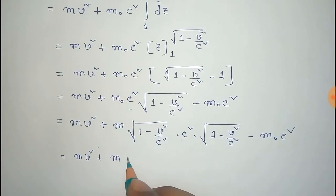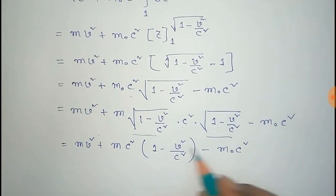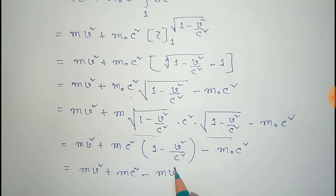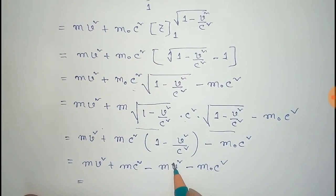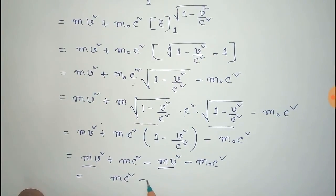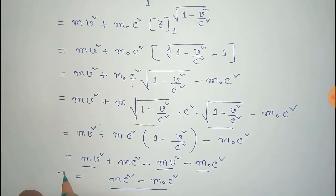After multiplication, the term M times (1 - v²/c²) into c² gives Mc² minus Mv². So we have MV squared plus Mc² minus Mv² minus M₀c². The MV squared terms cancel, leaving T = Mc² minus M₀c², where M₀ is the rest mass. This is the relativistic kinetic energy.